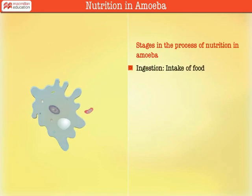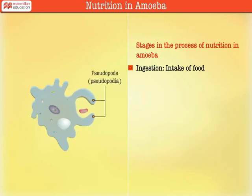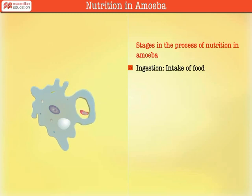Ingestion: When amoeba senses a food particle, it encircles the particle by forming two pseudopodia around it. This food is engulfed in the form of a vacuole.